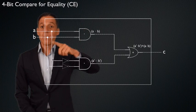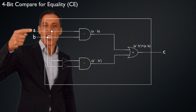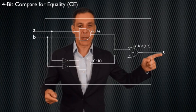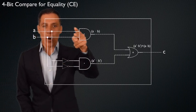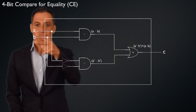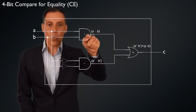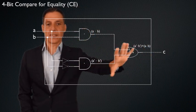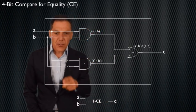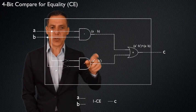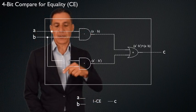Let me remind you what the one-bit compare for equality looks like. I take two single bits — think of them as A0 and B0 — and this tells me whether those two bits are equal. The circuit works like this: if they're both one, the AND gate outputs one. If they're both zero, they go into NOT gates, flip to ones, and that AND gate outputs one. So if this is one or this is one, I get a one out — otherwise a zero. That's the one-bit compare for equality. Let me draw this with a little abstraction — I'll represent it as a box labeled 1CE.